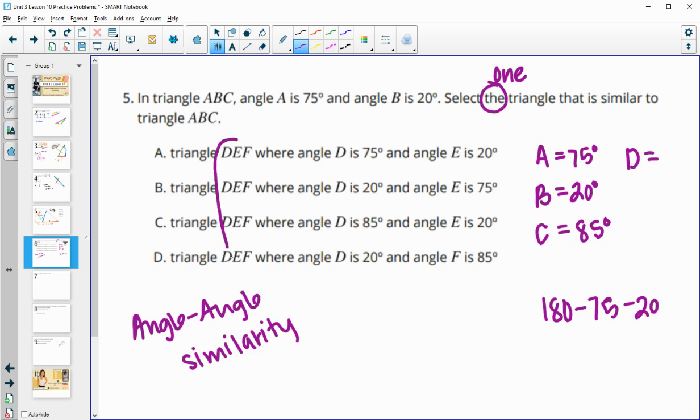Now, when I look here, I see that all of these put DEF in the same order. So DEF, so now these are going to have to match up. So A is going to have to match with D, B is going to have to match with E, and C is going to have to match with F. So we're going to have to see them in that same order. So let's take a look here. We said D is 75, and we said E is 20. So A matches D, B matches E. That's two angles. So A is similar.